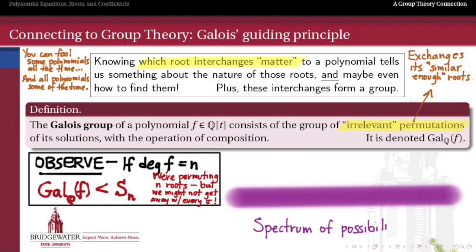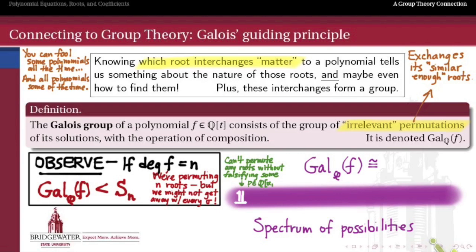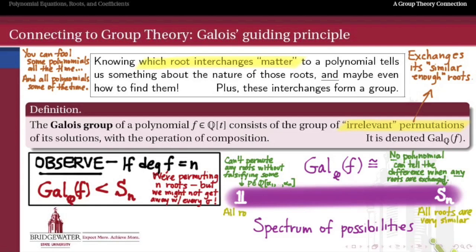This sets up an entire spectrum of possibilities for what the Galois group can be. At one end, the Galois group could be trivial - this is the case if no non-trivial permutation is irrelevant, meaning there's no permutation of the roots we can do without falsifying some polynomial that they satisfy. This would be the case if all roots are so different that we can't transpose any pair without breaking some equation. At the other end of the spectrum, the Galois group could be all of S_n - any permutation of the roots won't falsify any polynomial equation they satisfy, meaning no one can tell the difference. At that far right end are polynomials whose roots are all very similar over the rationals.